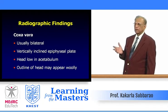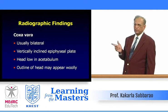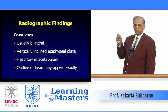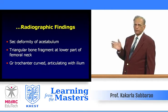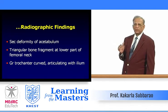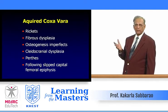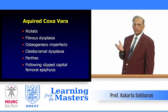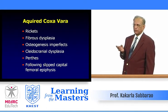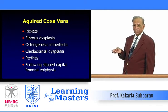Radiographic findings in coxa vara include: usually bilateral, vertically inclined epiphyseal plate, femoral head low in the acetabulum, outline of the head may appear only faintly, secondary deformity of the acetabulum rather than primary dysplasia, triangular bone fragment at the lower part of the femoral neck, and the greater trochanter curved and articulating with the ilium. Acquired coxa vara, where the femoral neck-shaft angle is much less than 120 degrees, occurs in rickets, fibrous dysplasia, osteogenesis imperfecta, cleidocranial dysostosis, Paget's disease, and following slipped capital femoral epiphysis.